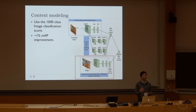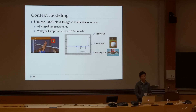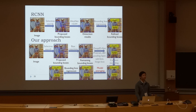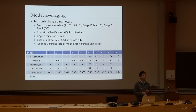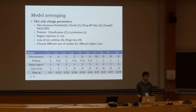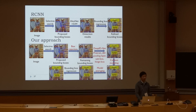For contextual modeling, we use the image classification scores from ClarifyNet as contextual information, and it improves the mean AP by about 1%. For model averaging, in previous works models are averaged from random initial points or different model sizes. In our approach, we combine 10 models that have different network structure designs, pre-training schemes, bounding box rejection schemes, and training objectives. We also investigate choosing different sets of models for different object classes and find even better results.